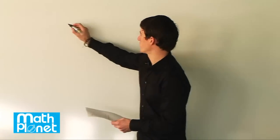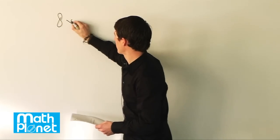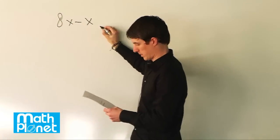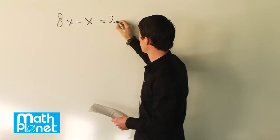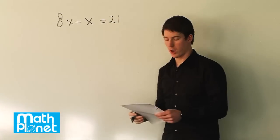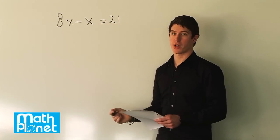For this problem we have the following equation: 8x minus x equals 21. Now we're given three options for what x might be and we have to figure out what that is.